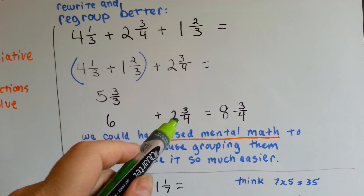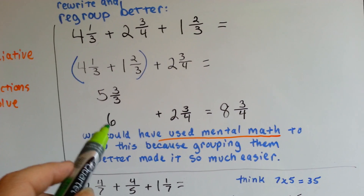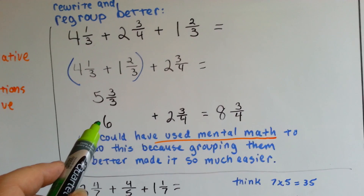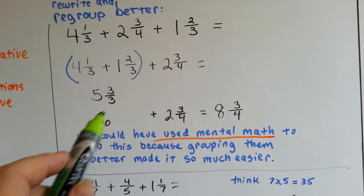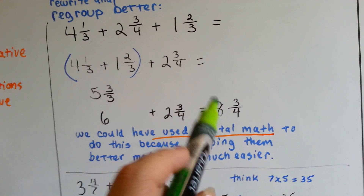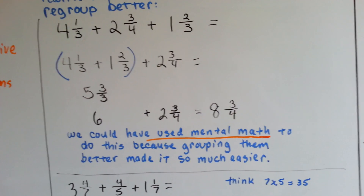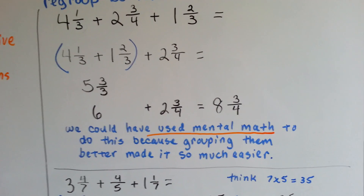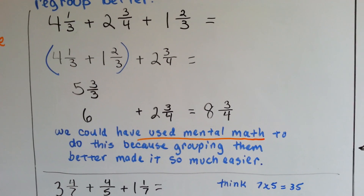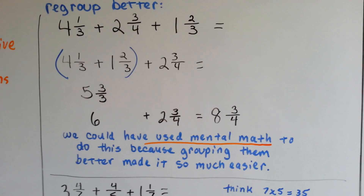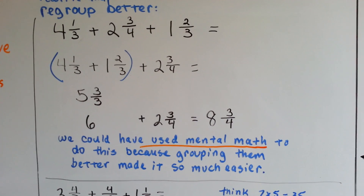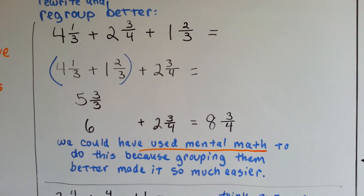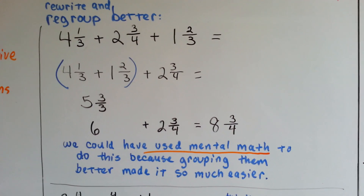Now to add the 2 and 3 fourths, we can just add them and get 8 and 3 fourths. We could have used mental math to do this because the grouping made them so much easier.